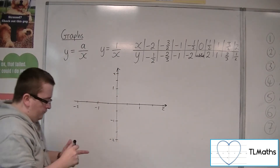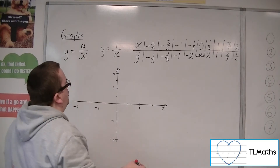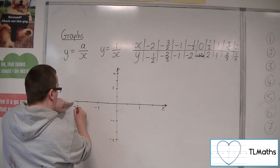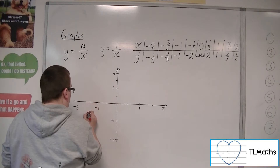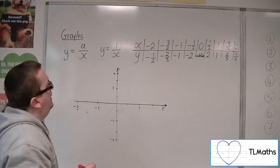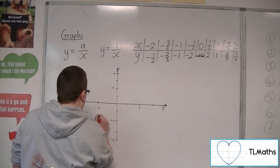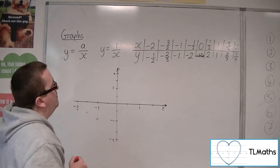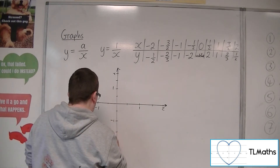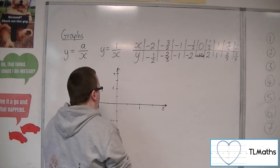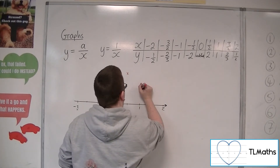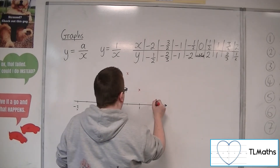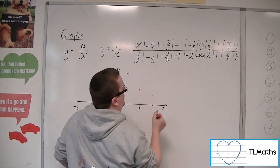We've got the point (minus 2, minus a half) about there. Then (minus 3 halves, minus 2 thirds) somewhere around there. Then (minus 1, minus 1). And then (minus a half, minus 2) which is down there. Then x equals 0 is undefined. Then (a half, 2), then (1, 1), then (3 halves, 2 thirds) about there, and (2, a half).